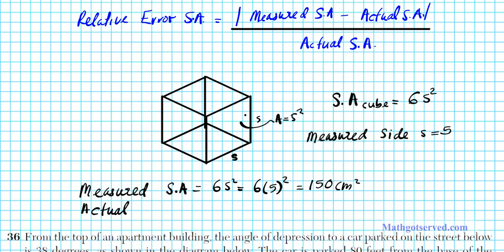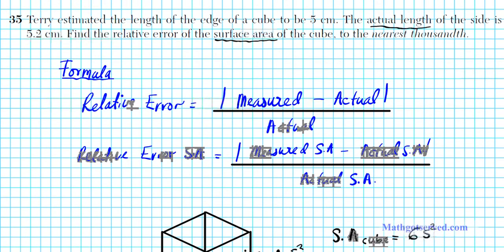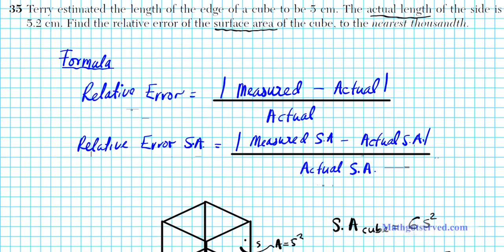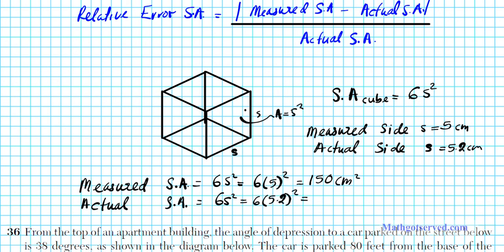Next we need the actual surface area, which is dependent on the actual side measure. The actual side S is 5.2 centimeters — because the problem says the actual length of the side is 5.2 centimeters. So the actual surface area, 6S², is going to be 6 times 5.2 squared. Entering that in the calculator, we get 162.24 centimeters squared.